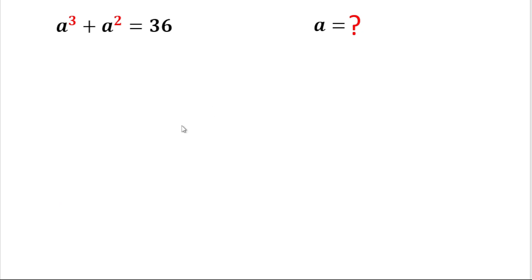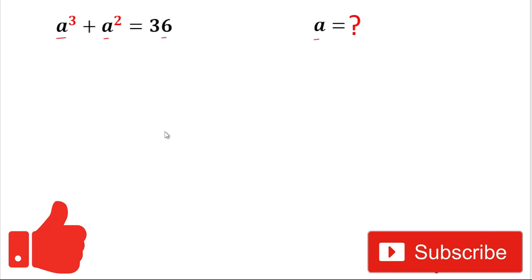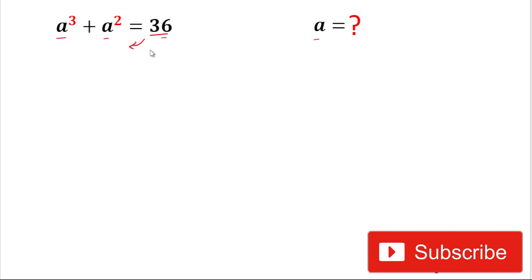Hello friends, welcome back to my YouTube channel. During this video we'll solve this interesting problem. The problem we have is a³ + a² = 36, and we'll have to find the value of a. Please subscribe to my channel and hit the like icon. For the solution, we take 36 to the left-hand side so it becomes negative 36: a³ + a² - 36 = 0.